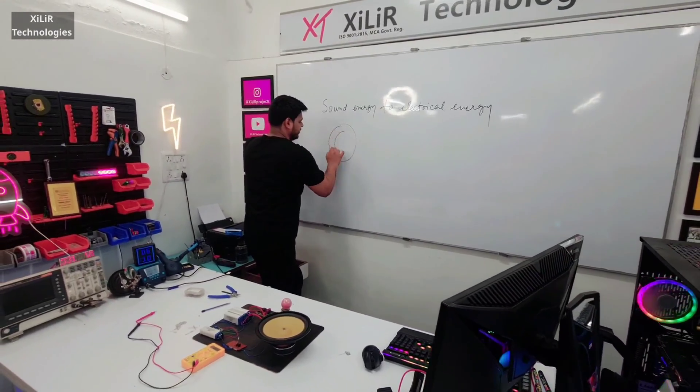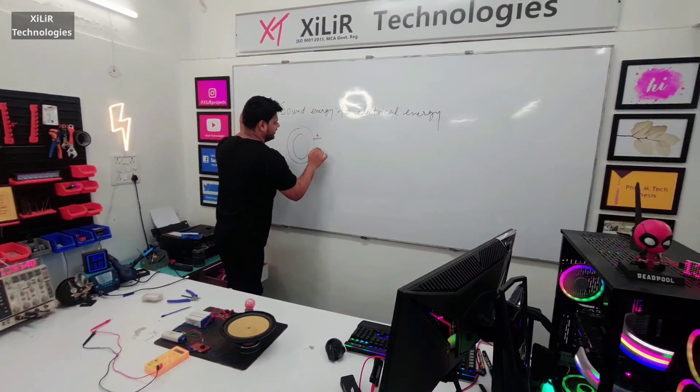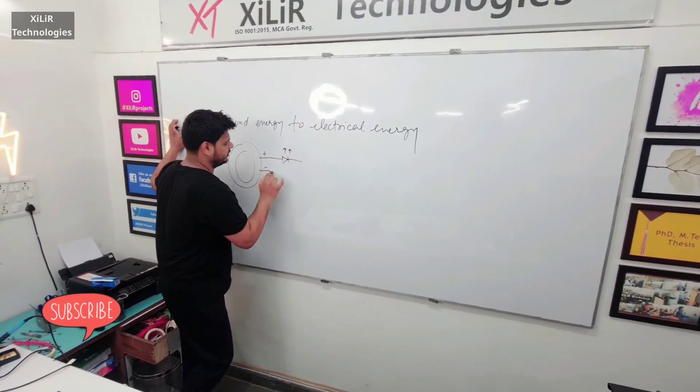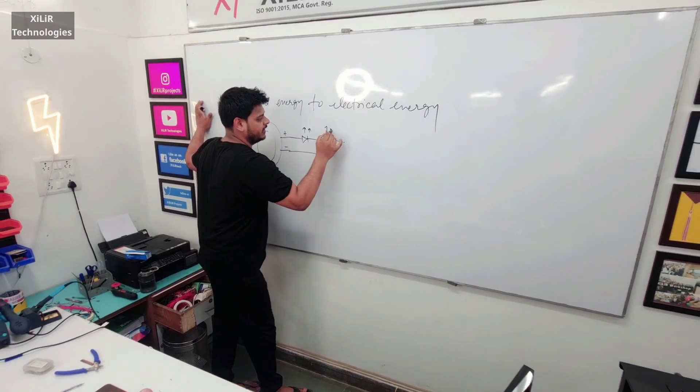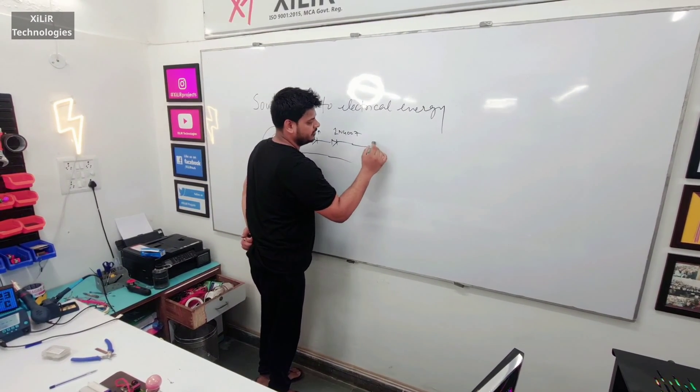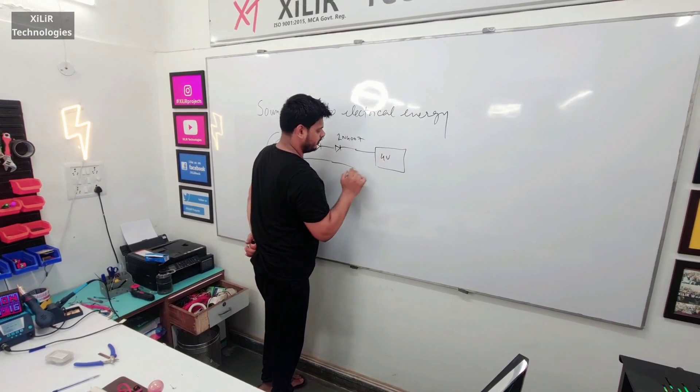So here we are using a speaker in which we will have positive and negative point, then we are showing an LED which is glowing.